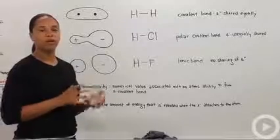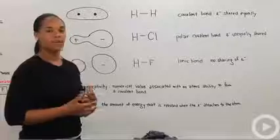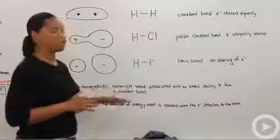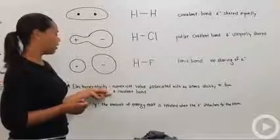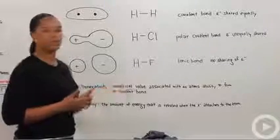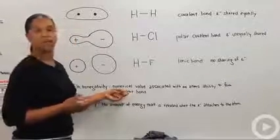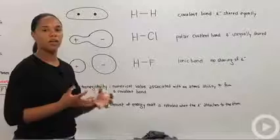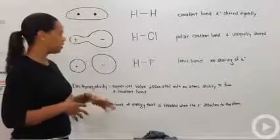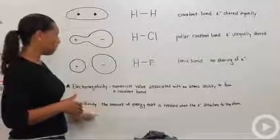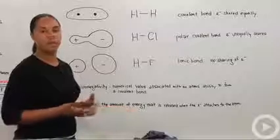One thing that can come up when you're thinking about electronegativity is this other term that's electron affinity. Let me say the definitions of those two things so that you're clear that they're not the same. Electronegativity is a numerical value that's associated with an atom's ability to form a covalent bond. It just tells you who likes the electrons more and who can have them gravitate towards it in a bond.